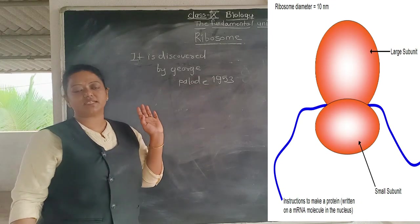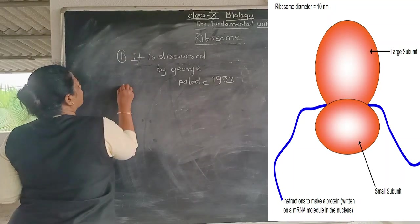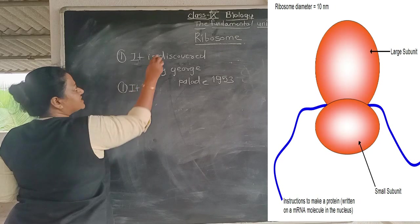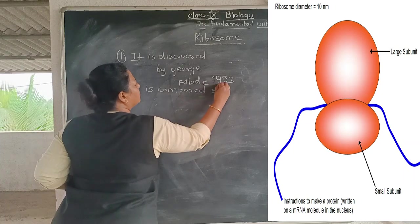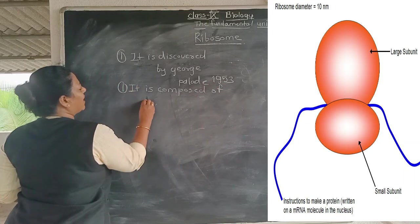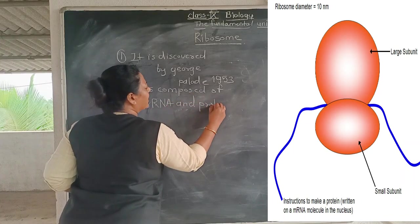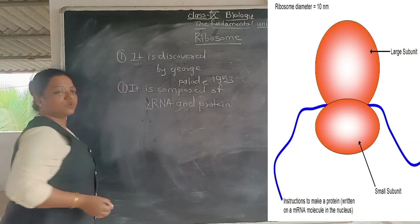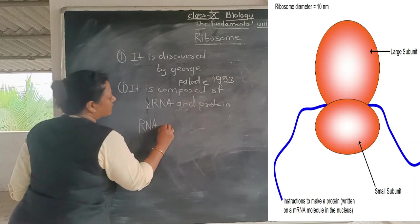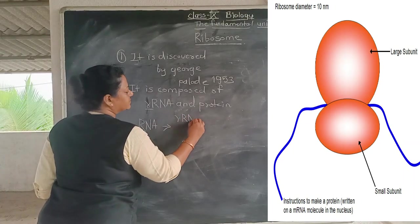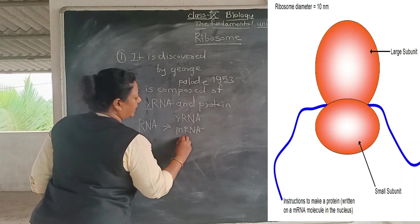This ribosome was discovered by George Palade in 1953, and it is composed of rRNA and protein. RNA is actually of three types: rRNA, mRNA, and tRNA.